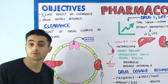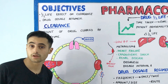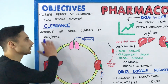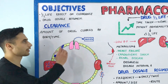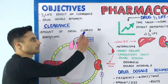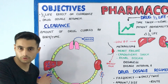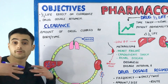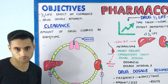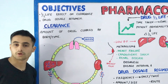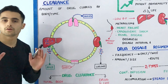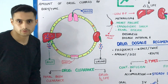The clearance of the drug is defined as the amount of drug cleared by the body per unit time — how fast the drug is eliminated or cleared from your body. Have a look at this diagram: we know that there are various routes of drug clearance.